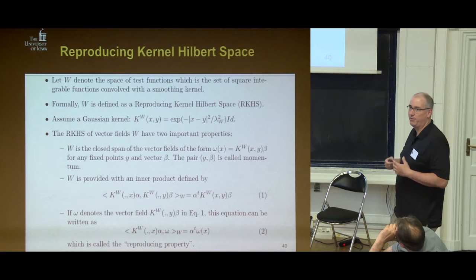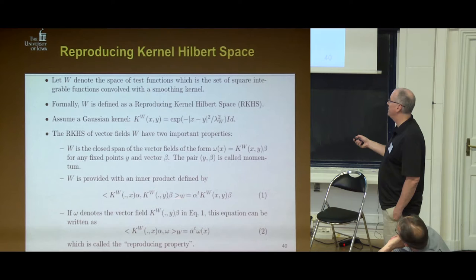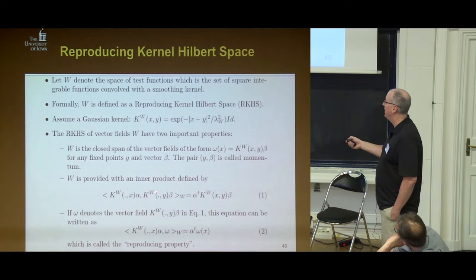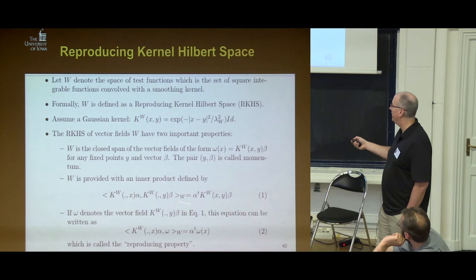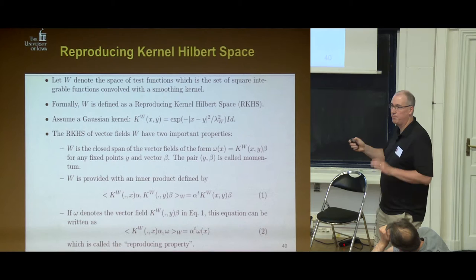The reproducing kernel property: if I look at the inner product equation with smooth vector fields, I can replace one with an arbitrary smooth vector field omega from this class, and then do the same on the right-hand side. This allows me to evaluate my vector field at x times a vector by taking the inner product with the basis kernel and my smooth vector field. In summary: we have our space of test vector fields with a basis of smooth vector fields located at y with magnitude and direction alpha, and we have an inner product.